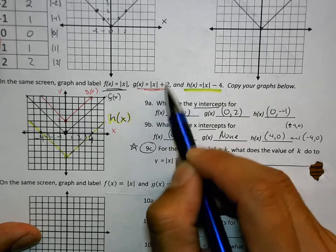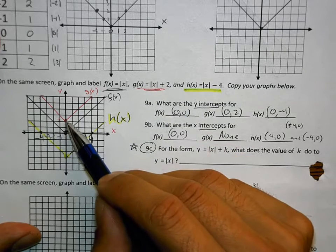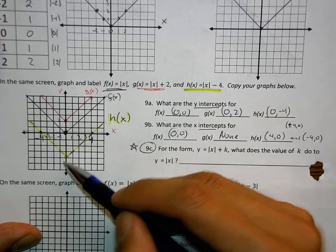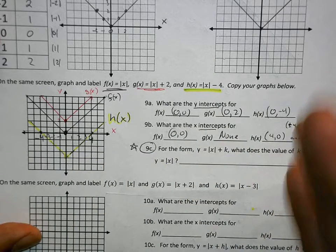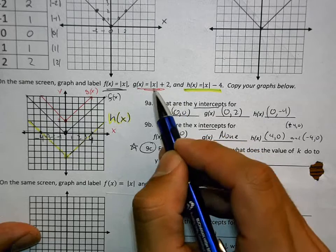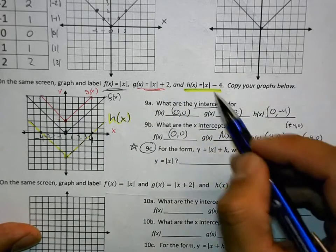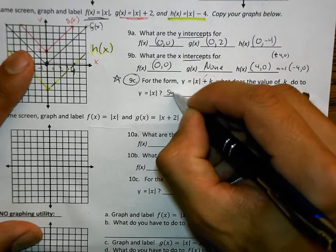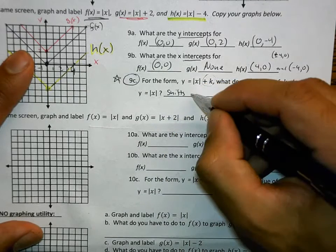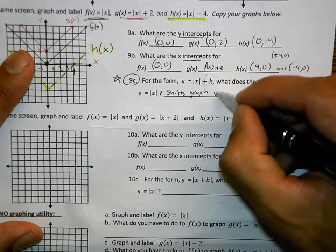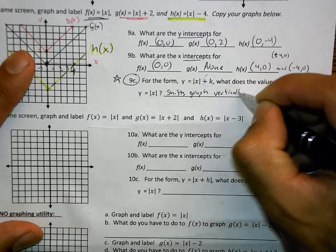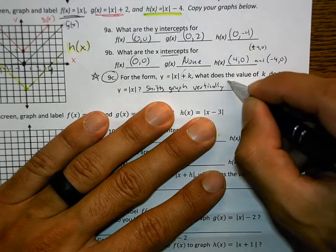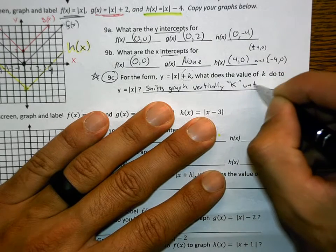For example, if I have plus 2, it shifted it up 2. If this says minus 4, it shifted it down 4 units. And it really matters where that plus 2 is. It's outside of the absolute value. Because it's outside, because the k is outside, it shifts the graph vertically K units.